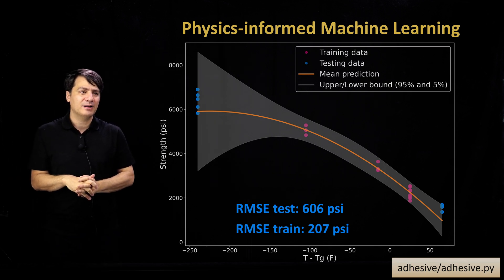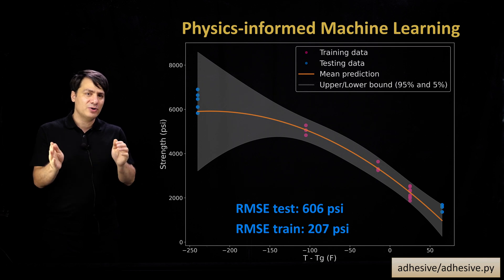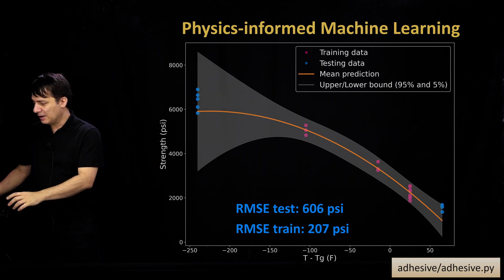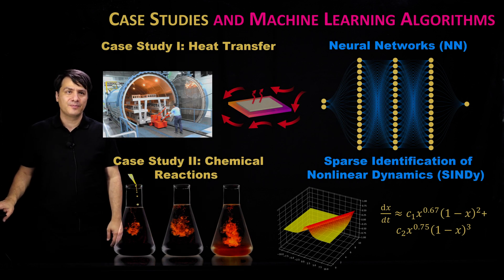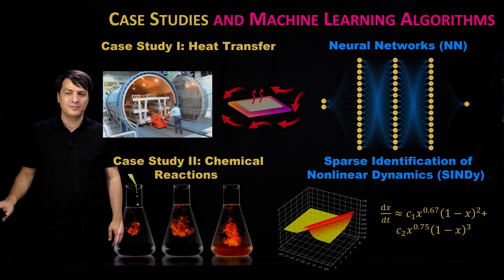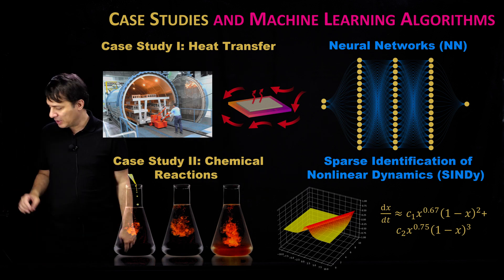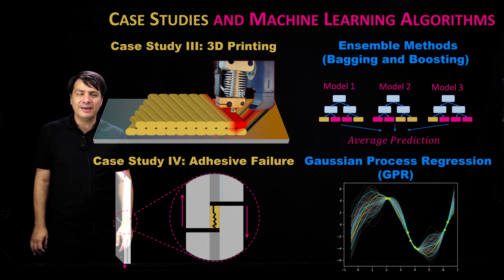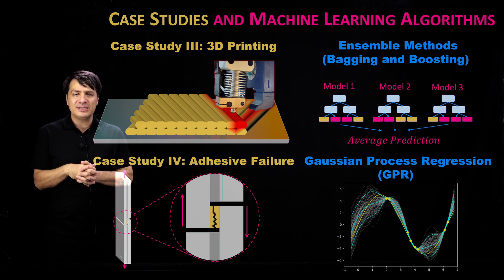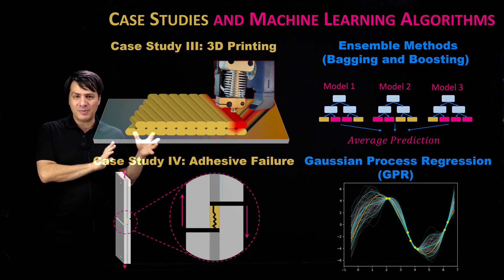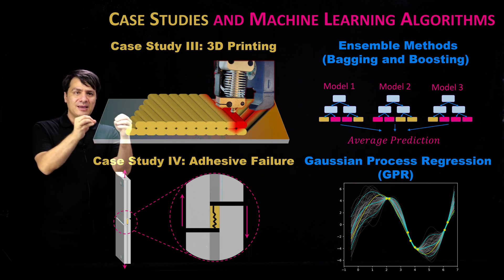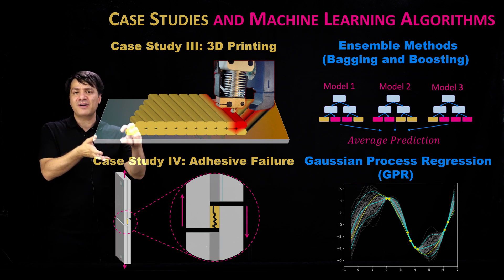This concludes all the lectures we had on physics-informed machine learning. I'll do a very quick summary of what we learned in this course, and hopefully that becomes quite effective in your other applications. We went over four case studies in this course: heat transfer and solving it using neural network, traditional neural networks and physics-informed neural networks; understanding chemical reactions using SINDy, identifying closed-form equations that govern the chemical reactions; 3D printing and trying to predict the strength of a 3D printed part using ensemble methods including bagging and boosting.